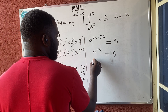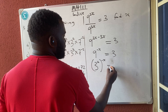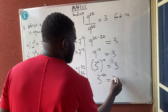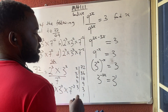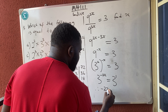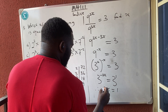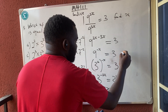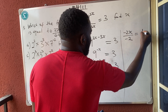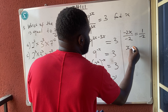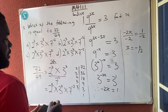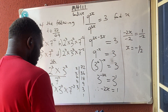Now reduce 9 to 3 raised to power 2, bracket minus x, is equal to 3 raised to power 1. So 3 raised to power 2 times minus x equals 3 raised to power 1. The bases are the same, so 3 cancels 3. Therefore I have minus 2x is equal to 1. Divide everybody by minus 2: minus 2x over minus 2 equals 1 over minus 2. We don't leave minus at the denominator, so my answer is negative one over 2.